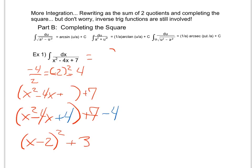So rewriting this function, I have the integral of dx all over x minus 2 squared plus 3. Well, this is helpful because now I can say I have something squared plus something squared where my first thing, my u, is x minus 2 and my a is the square root of 3.